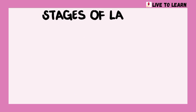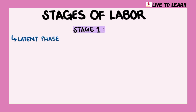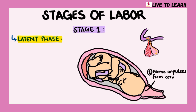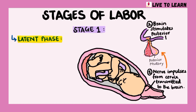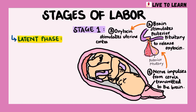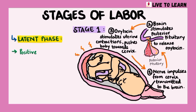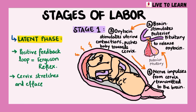The process of labor is divided into three stages. The first stage is further divided into the latent phase and the active phase. During the latent phase, nerve impulses from the cervix are transmitted to the brain, which causes the brain to stimulate the posterior pituitary to release oxytocin. Oxytocin stimulates uterine contractions, which further push the baby towards the cervix. This creates a positive feedback loop known as Ferguson's reflex, which is a neuroendocrine reflex in which fetal distension of the cervix stimulates a series of neuroendocrine responses leading to oxytocin production. By the end of the latent phase, the cervix stretches and effaces to about 4 cm.